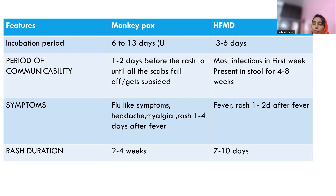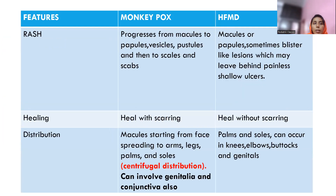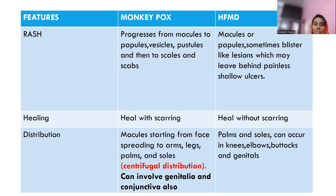Rash duration is a very important differentiating point. Regarding rash type: in monkeypox, the rash progresses from macules to papules, then vesicles, pustules, scabs, and then heals — in contrast to chickenpox where all lesion types are seen simultaneously. In hand foot mouth disease, macules or papules appear, which may become vesicular with a blobby appearance, and then break open to form small shallow ulcers. Importantly, monkeypox lesions heal with scarring, whereas hand foot mouth disease lesions heal without scarring.